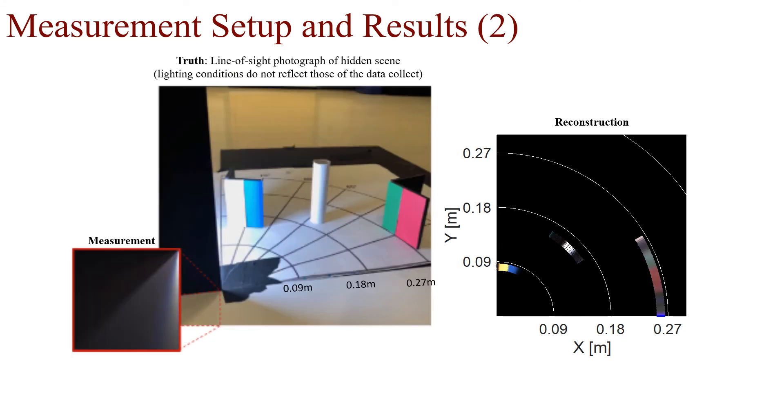Here I'm showing a second experiment with three hidden targets. In this measurement, while you may be able to pick out a contribution to the measurement from the yellow-blue target and the white cylinder, the contribution from the green-red target is difficult to make out. Range information is even more difficult to pick out in the measurement. Still, in our reconstruction we detect three targets and place them correctly with respect to each other in range.